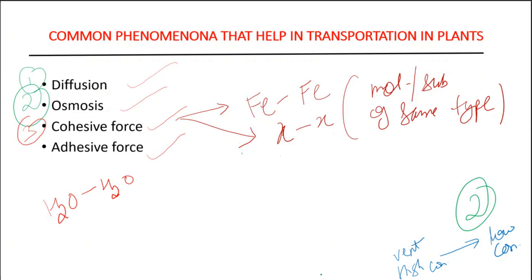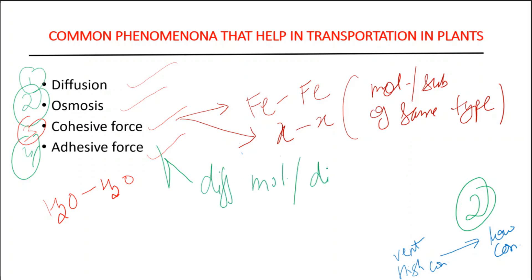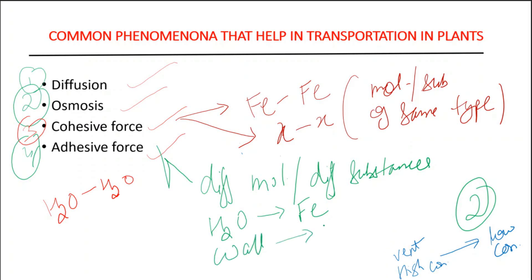The fourth type is adhesive force. Adhesive force is just the reverse of cohesive force. In adhesive force, the force of attraction acts between different molecules and different substances — like a water molecule and an iron molecule. Also, the wall of xylem and phloem showing a force of attraction with minerals is an example of adhesive force.